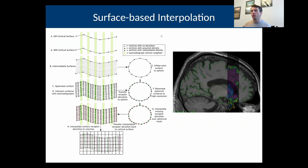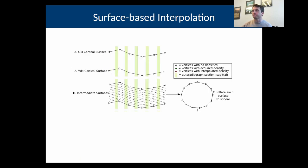To overcome this problem, we've developed a surface-based approach to estimating the missing receptor densities. I'll go through this pipeline in more detail. The basic idea is that here we have our gray matter cortical surface, our white matter cortical surface, and then acquired sections. The first step is to create intermediate surfaces between the gray matter surface and the white matter surface. That's pretty straightforward.